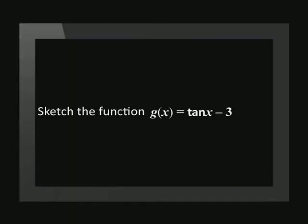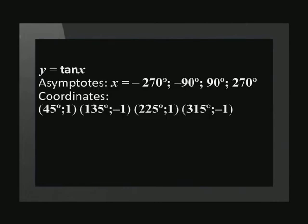Let's do another graph together. Sketch the function g(x) = tan(x) - 3. First, list the asymptotes and coordinates of the standard graph.